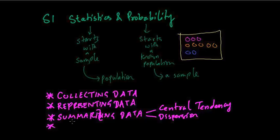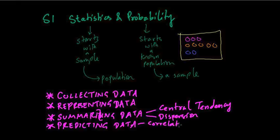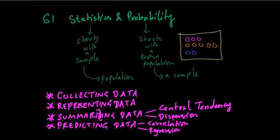The final step is predicting the data — making a prediction about the population from the sample. This is broken down into two parts: first is correlation, where we find out whether there is any relationship between two datasets; and then there is regression, which gives a specific formula from which a prediction about the data can be made. These are the steps of statistics.